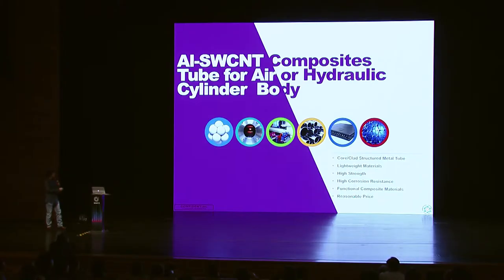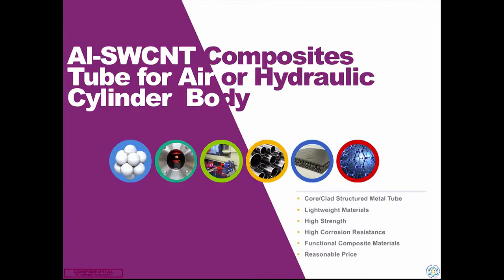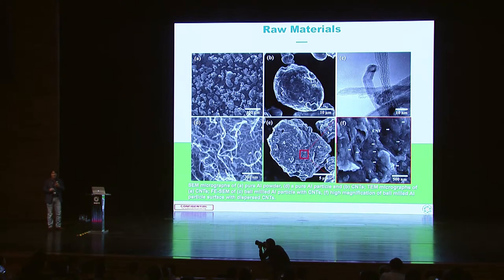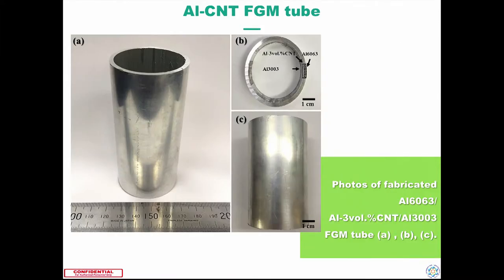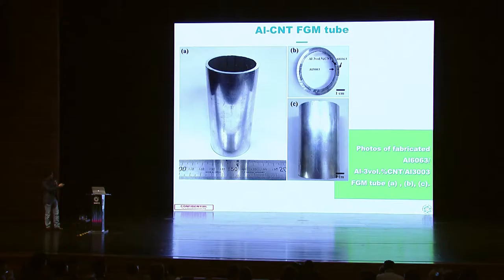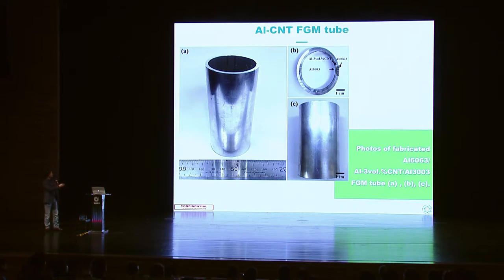First, I would like to introduce a practical story — especially the aluminum-based single-wall carbon nanotube composite for air cylinder and body applications. The raw material powder is not in a bulk state; aluminum powder and carbon nanotubes are mixed together, then processed through extrusion. It was successfully made. I named this material a functionally graded aluminum CNT composite, because the outside is aluminum 6000 series and the inside is 3000 series — those have different properties.